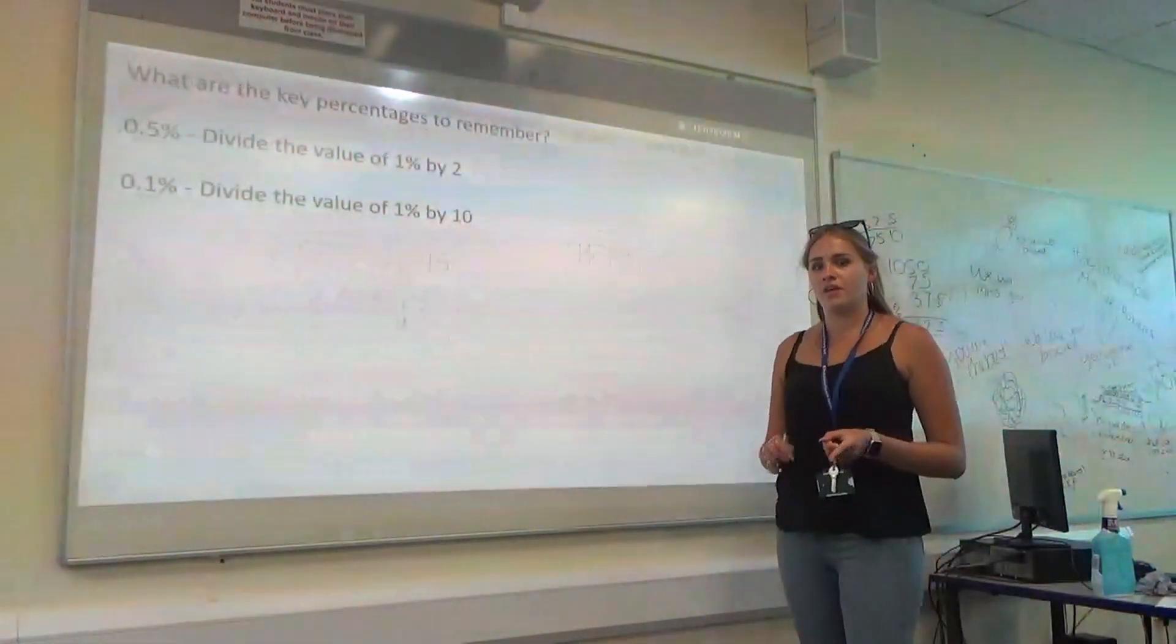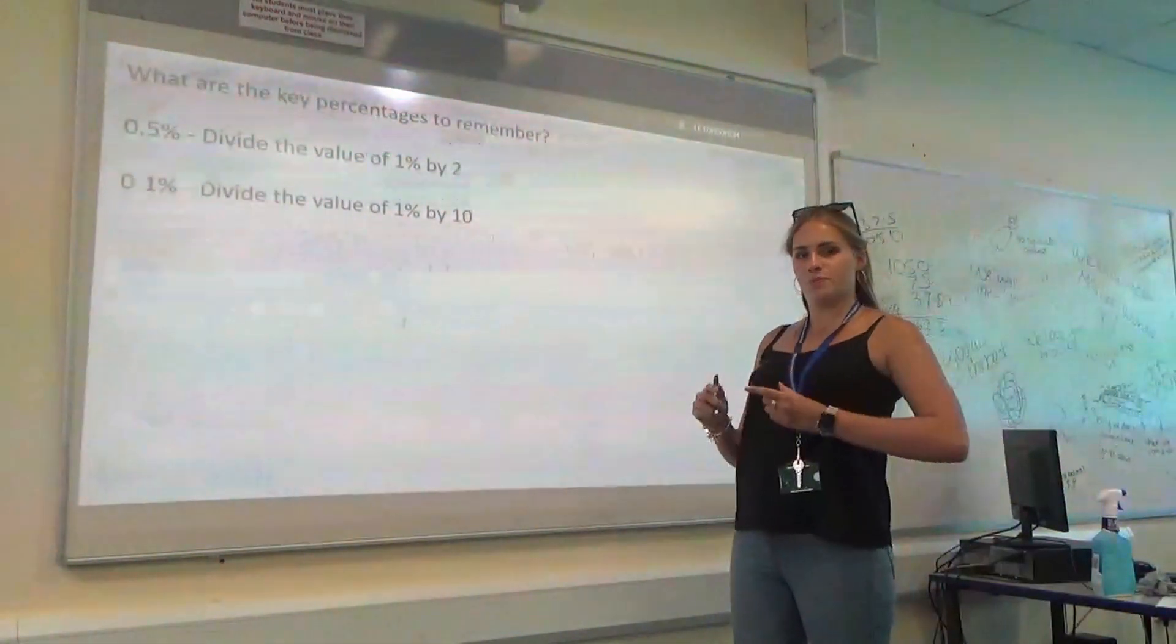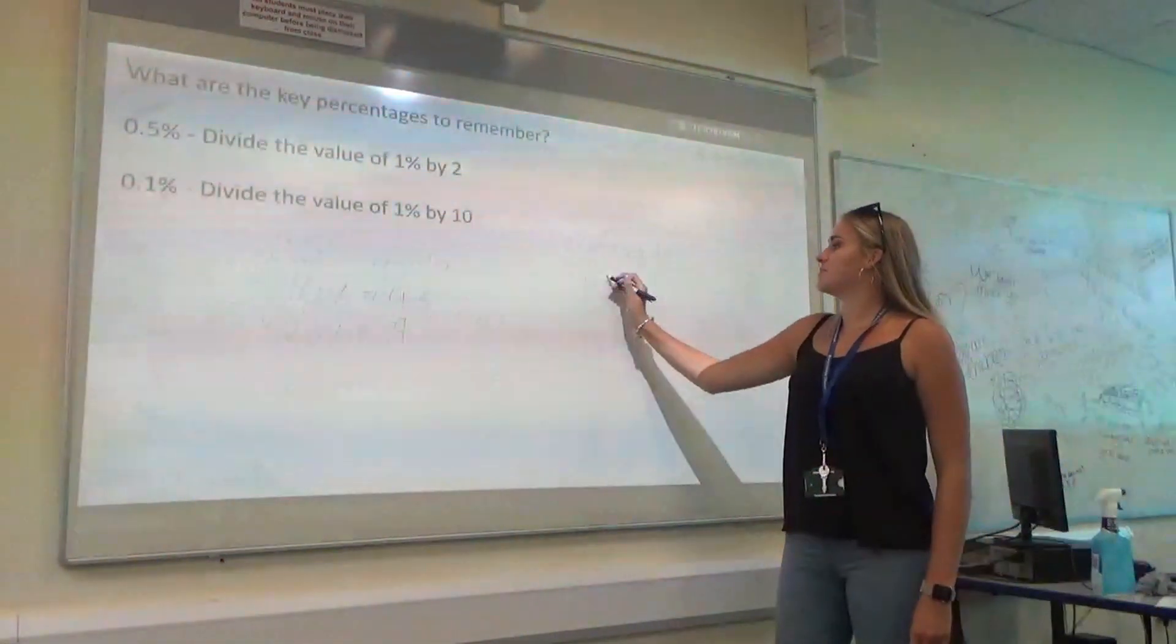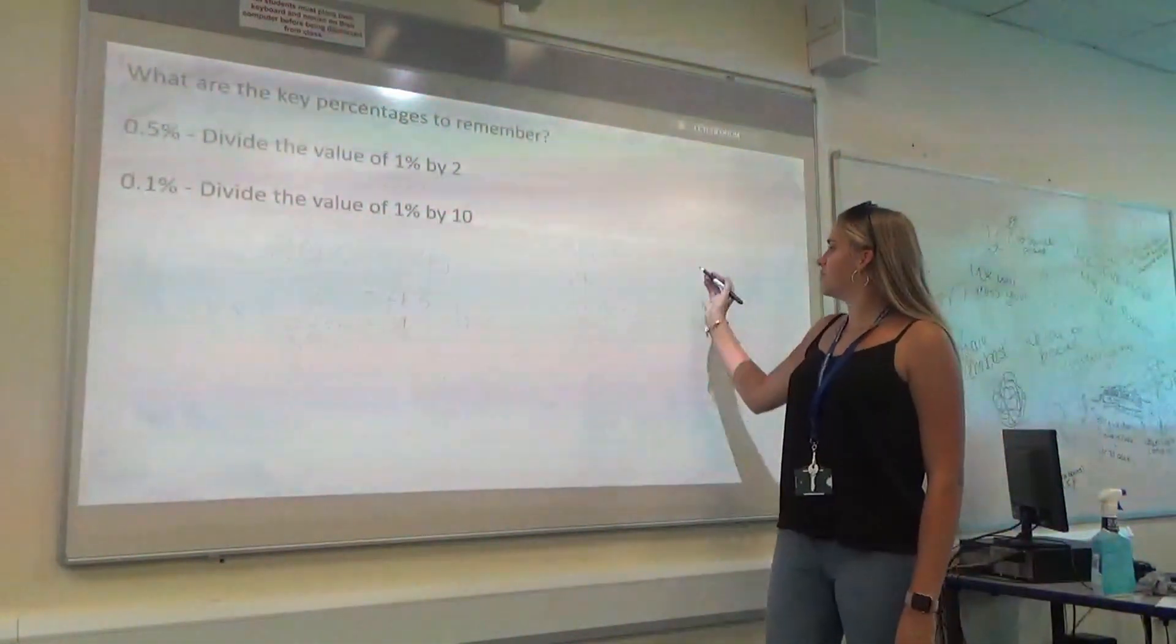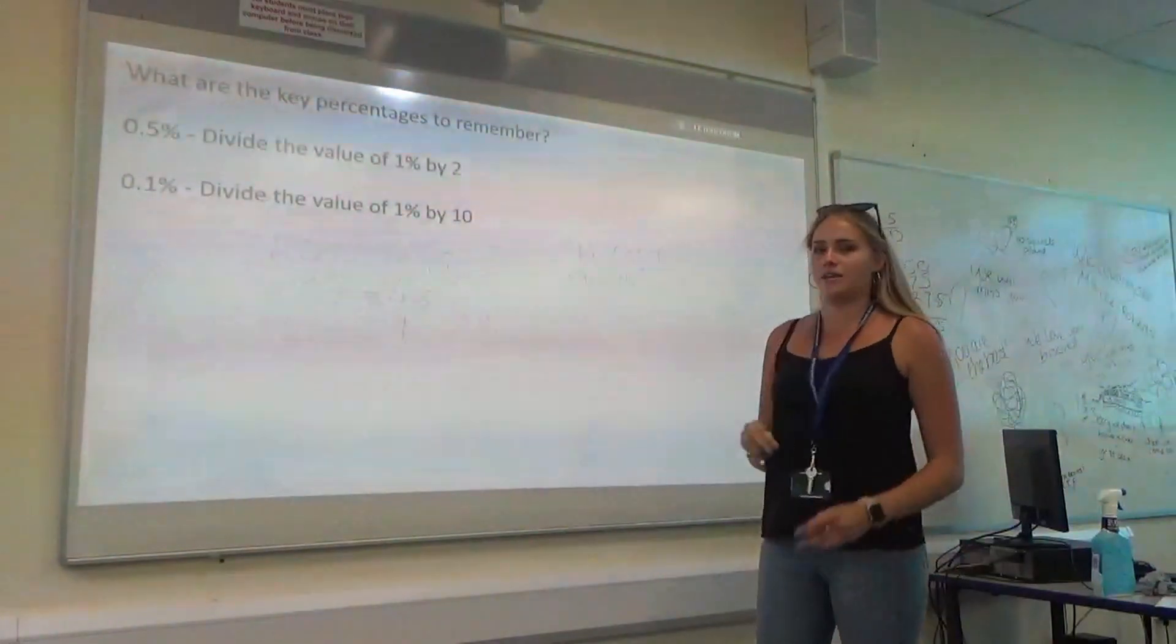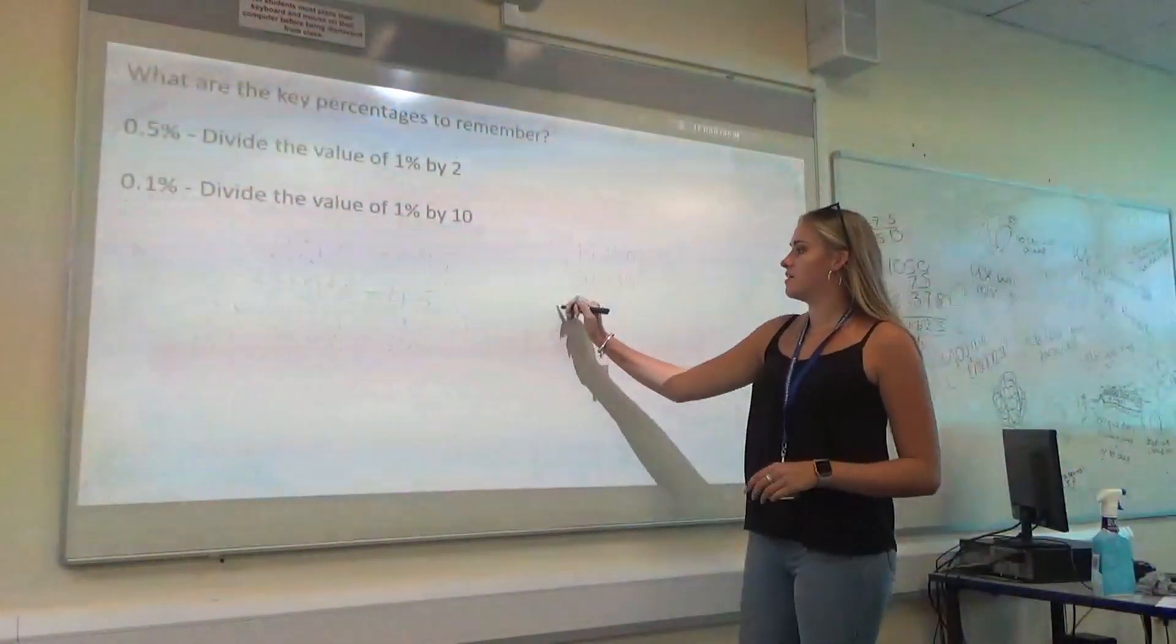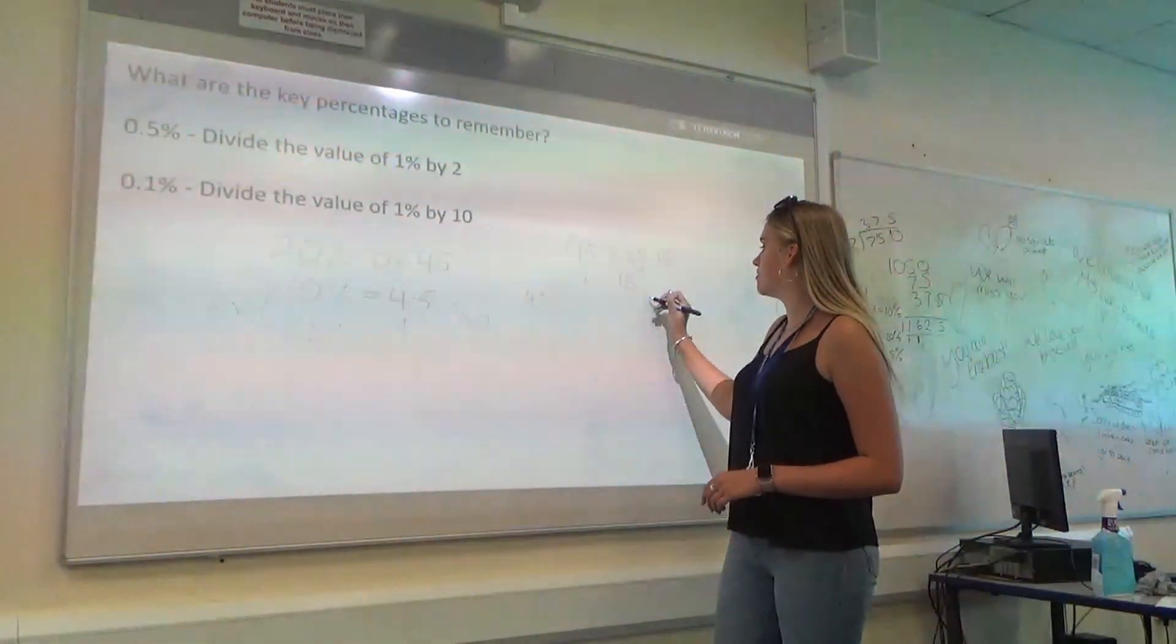I'm going to do a way that most people would go to first, which is finding our 10%. Find 10%. We divide by 10. So, I'm going to get 18. I need to get to 40. So, I'm going to times this. By 4.